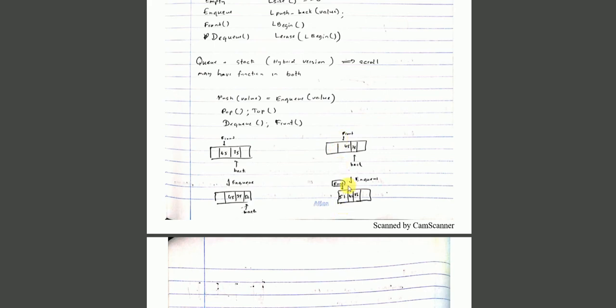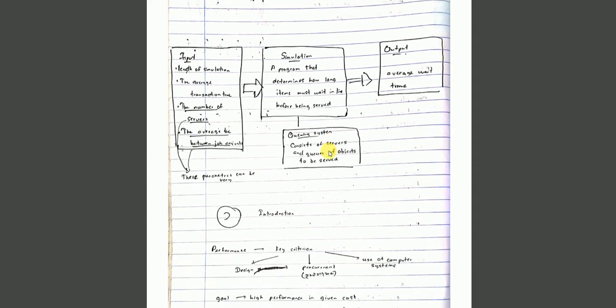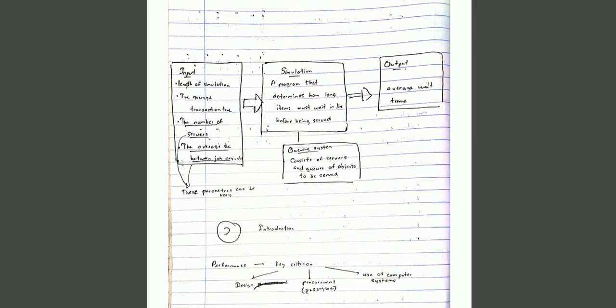There are queue variations like double-ended queue (deque) which allows operations at both ends. Some queues support both push and pop operations. These hybrid structures combine properties of stacks and queues for specific applications.